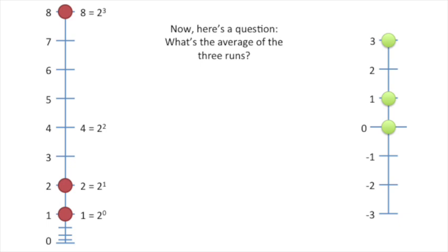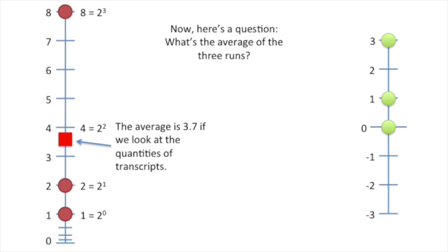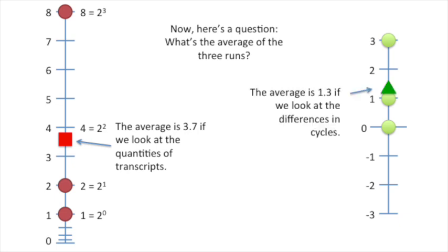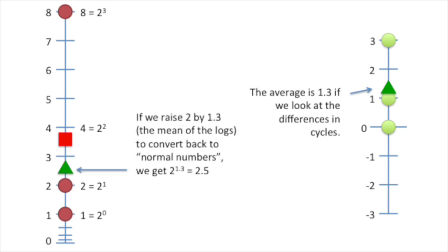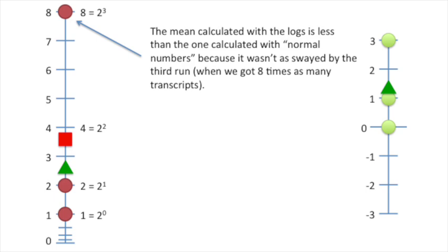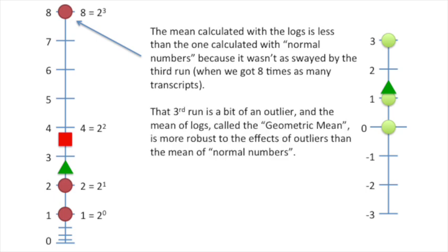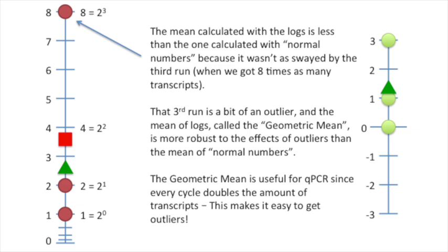Now, here's a question: what's the average of the three runs? The average is 3.7 if we look at the quantities of transcripts. The average is 1.3 if we look at the differences in cycles. If we raise 2 by 1.3 — the mean of the logs — to convert back to normal numbers, we get 2 to the 1.3 equals 2.5. The mean calculated with the logs is less than the one calculated with normal numbers, because it wasn't as swayed by the third run when we got eight times as many transcripts. That third run is a bit of an outlier, and the mean of the logs, called the geometric mean, is more robust to the effects of outliers. The geometric mean is useful for qPCR since every cycle doubles the amount of transcripts, making it easy to get outliers.